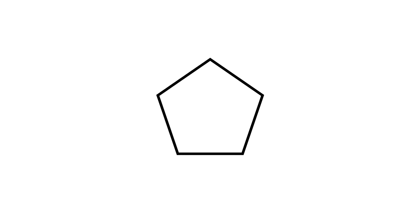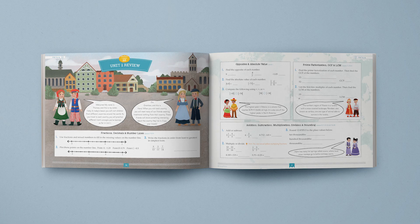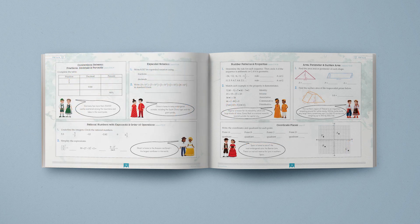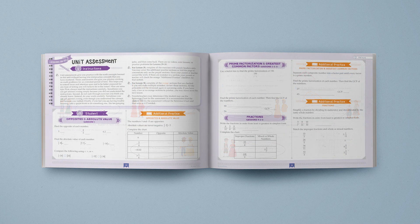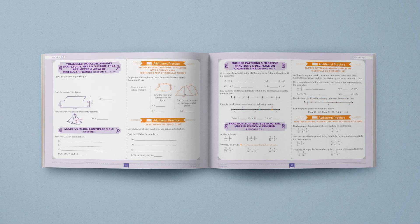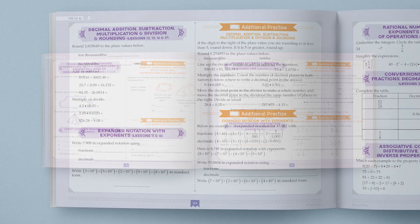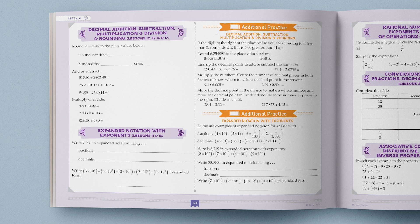At the end of each unit, there is a review lesson and a unique assessment. Two lessons are allotted for the unit assessment. On the first day, students complete the purple sections and have their work checked by a parent. If sections have mistakes, parents put a check in the correlating orange additional practice box. On the second day, students complete only the orange sections that have a checkmark in the box. Pilot parents loved these assessments because they could see exactly what concepts their children understood and what they needed to practice.